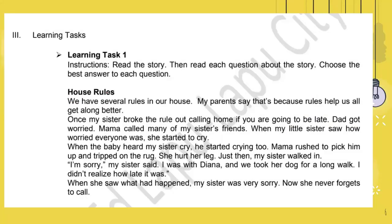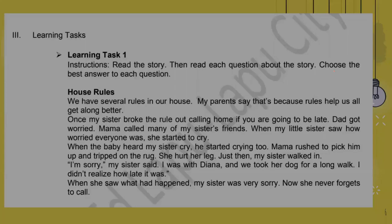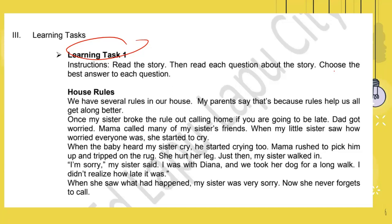Now you are ready to answer the learning tasks. We will start with learning task number one. The instructions say: read the story, then read each question about the story, and choose the best answer to each question. In your answer sheet, put numbers 1, 2, 3, and so on, and write the letter of your answer. While I am reading, I hope you are reading silently as well. I will give you clue words and translate some sentences to make the text clearer.